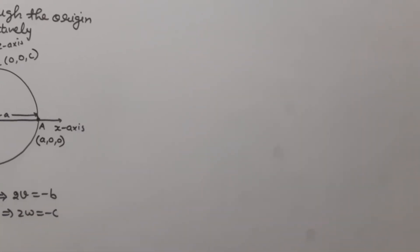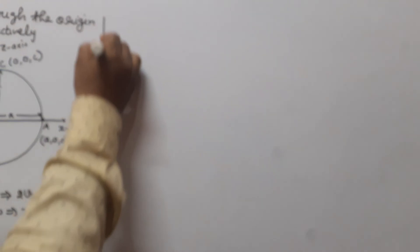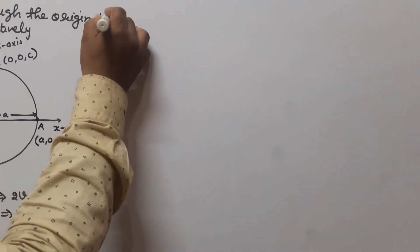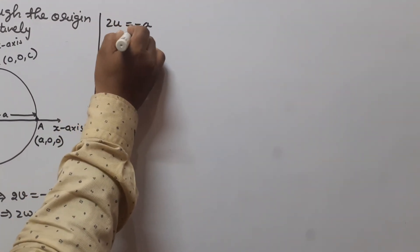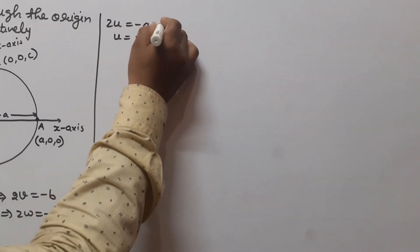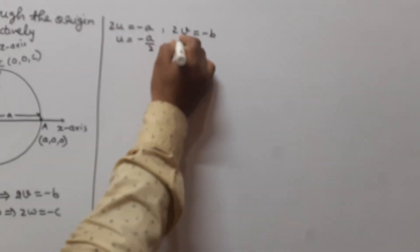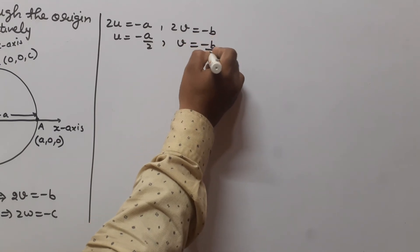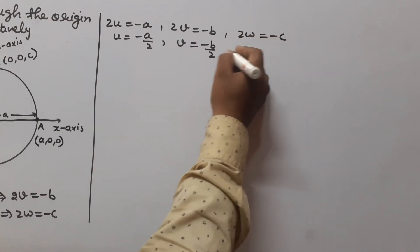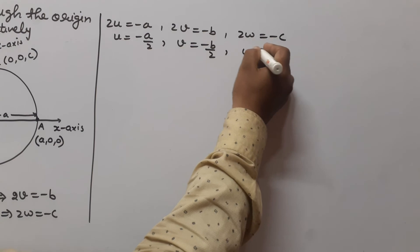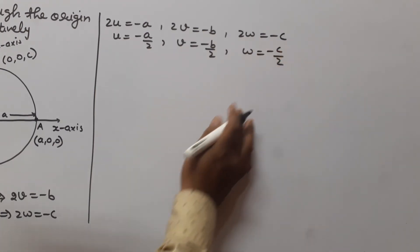Now we find the values of U, V, W, and D. From 2U = −a, we get U = −a/2. From 2V = −b, we get V = −b/2. From 2W = −c, we get W = −c/2. And D = 0.